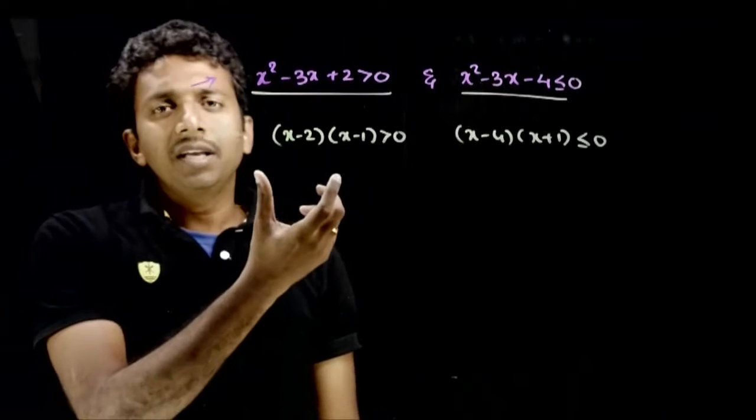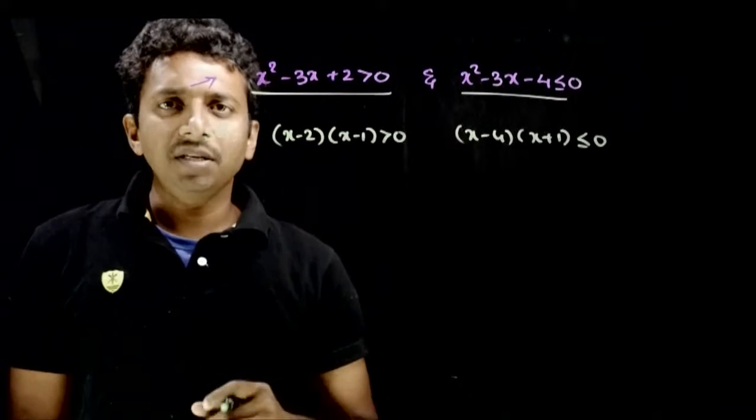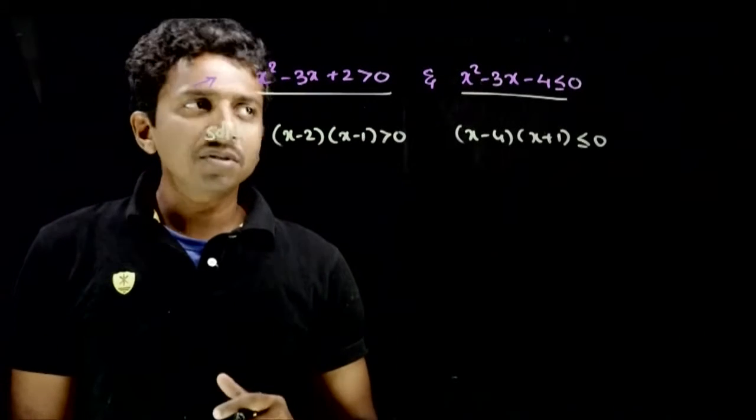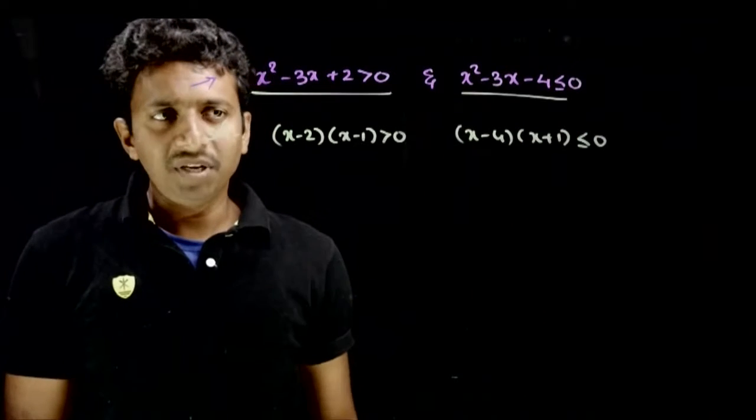For quadratic inequalities, whenever you have a quadratic inequality greater than 0, x lies outside the roots. If the quadratic inequality is less than 0, then x lies between the roots.